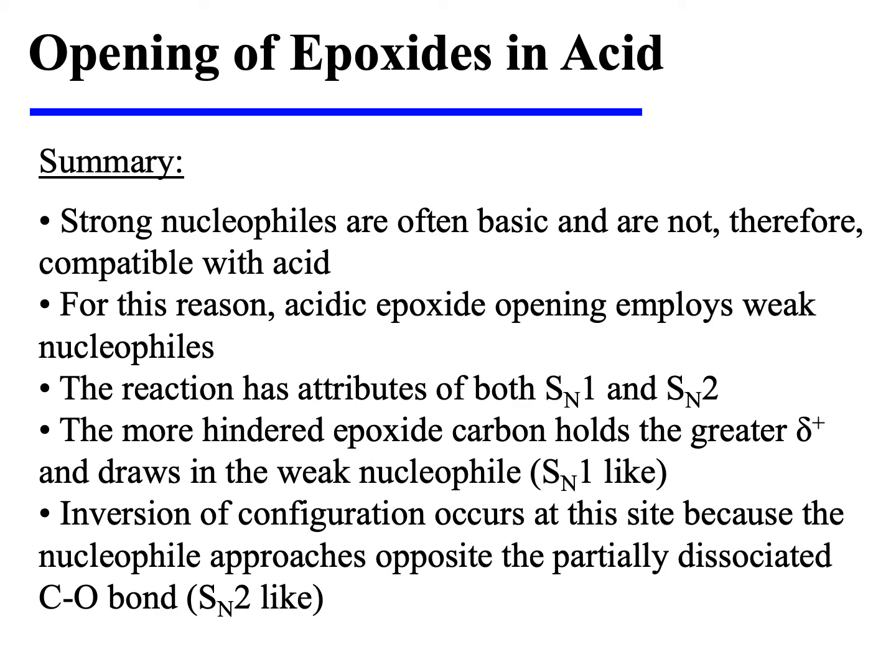In summary, strong nucleophiles are often basic and are not, therefore, compatible with acid. For this reason, acidic epoxide opening employs weak nucleophiles. The reaction has attributes of both SN1 and SN2. The more hindered epoxide carbon holds the greater partial positive charge and draws in the weak nucleophile — this attribute is SN1-like. Inversion of configuration occurs at this site because the nucleophile approaches opposite the partially dissociated C–O bond — and that attribute is SN2-like.